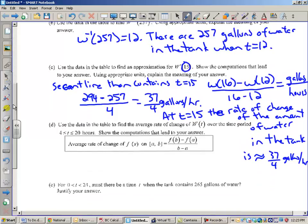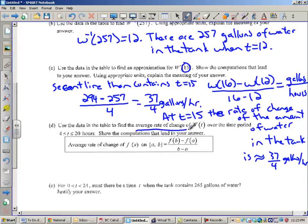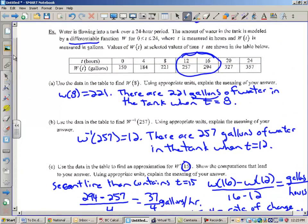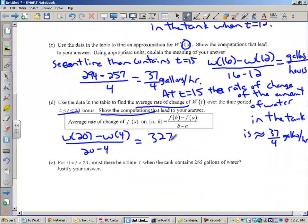Alright, so now we have to do D, which says use the data to find the average rate of change of W(t) over the time period 4 to 20. So, to do this, we would do W(20) minus W(4) divided by 20 minus 4. This is me showing the computations that lead to my answer. So, let's go up to the table and see if we can find those. W(20) was 327. W(4) was 184. So, that's 327 minus 184 all over 16. So, let's see if I can figure that one out. That's going to be about 143, I believe, divided by 16.